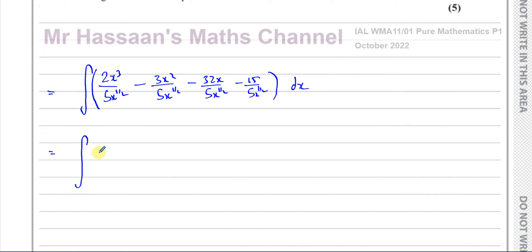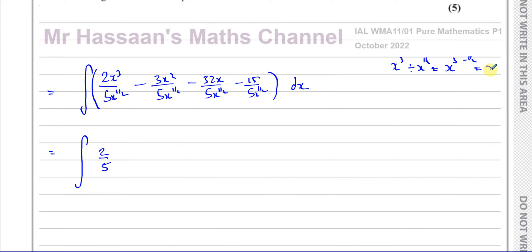This is like 2 over 5, so I have 2 fifths. Then you have x to the power of 3 divided by x to the power of a half. Now, remember, we're going to use the laws of indices here — when you divide two numbers in index form, you subtract the powers. So that's x to the power of 3 minus a half, which is x to the power of 5 over 2, because it's like 6 over 2 minus 1 over 2, which is 5 over 2. I like to leave it in fraction form, so it's x to the power of 5 over 2.